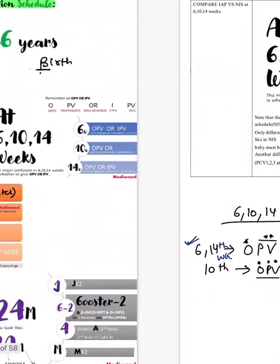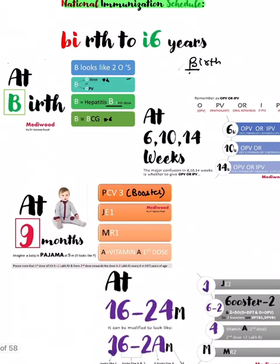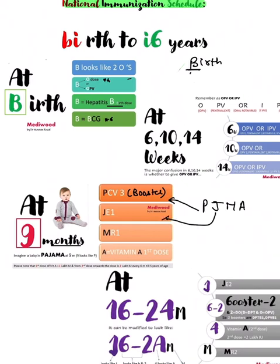At nine months, remember a nine-year-old baby wearing a pajama: P stands for PCV booster (having given two prior doses at 6 and 14 weeks), J stands for Japanese Encephalitis first dose, M stands for Measles-Rubella first dose, and A stands for Vitamin A first dose — all given together at nine months.